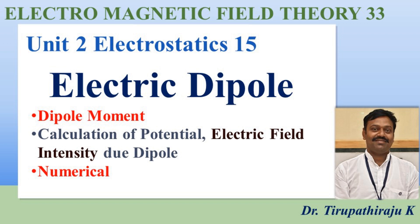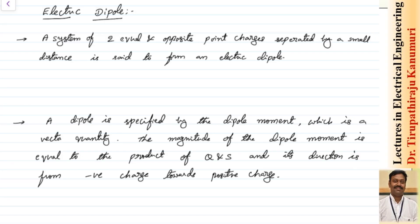Hi all, today we are going to discuss about electric dipole. A system of two equal and opposite point charges separated by a small distance is said to form an electric dipole. Let us take for example, I am taking two charges: one charge as minus Q, another charge as plus Q.